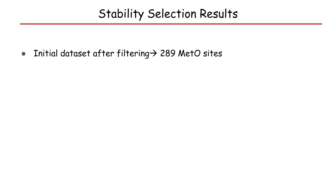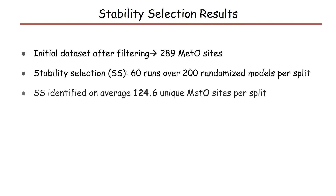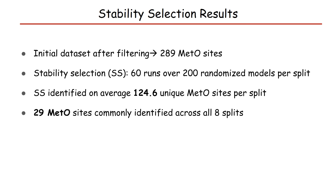Stability selection results are reported here. Our initial dataset after filtering had 289 methionine oxidation sites. We ran 60 iterations per split with 200 randomized models in each iteration of stability selection. With that, we were able to identify an average of 124.6 unique METO sites per split — reducing the number of sites to less than half. We also identified 29 METO sites commonly appearing across all eight training and testing splits.